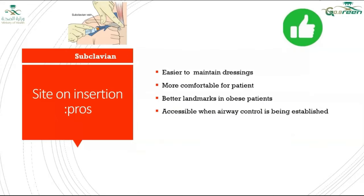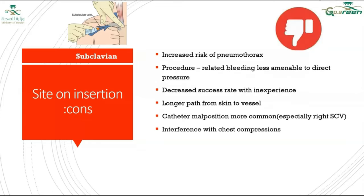For subclavian: advantages include easy dressing maintenance on the straightforward skin surface, more comfort for the patient who can move his neck freely, better landmarks especially in obese patients, and accessibility when airway management is being established. Disadvantages include high risk of pneumothorax, it is not compressible if bleeding occurs, higher failure rate in less experienced operators, and catheter malposition is more common especially with the right subclavian vein. There is also potential interaction with chest compressions during CPR.